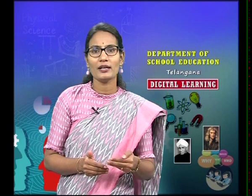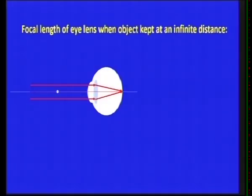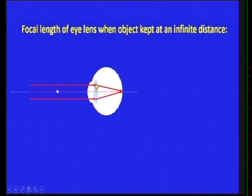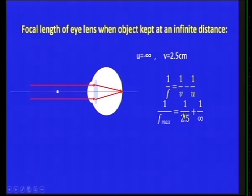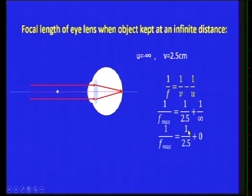Let us find the maximum focal length of the eye lens. When the object is at a longer distance, the focal length is maximum. The light rays come from infinity, parallel to the principal axis, and form the image on the retina. The object distance is taken as infinity and image distance v = 2.5 cm. Using the lens formula: 1/f_max = 1/2.5 + 1/∞ = 1/2.5 + 0 = 1/2.5. Therefore, f_max = 2.5 centimeters.